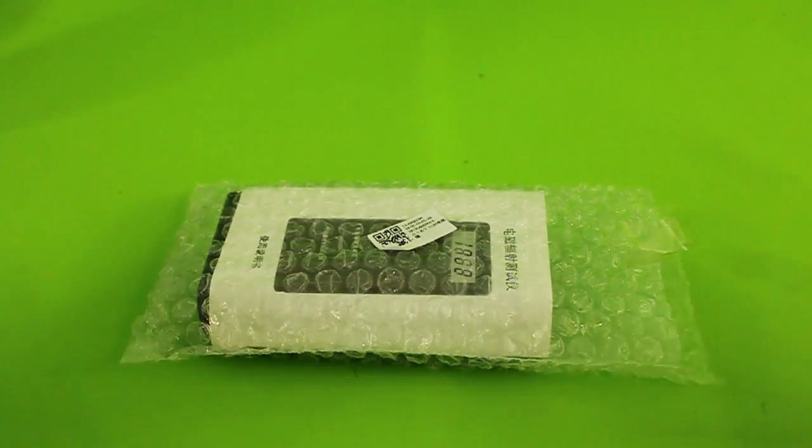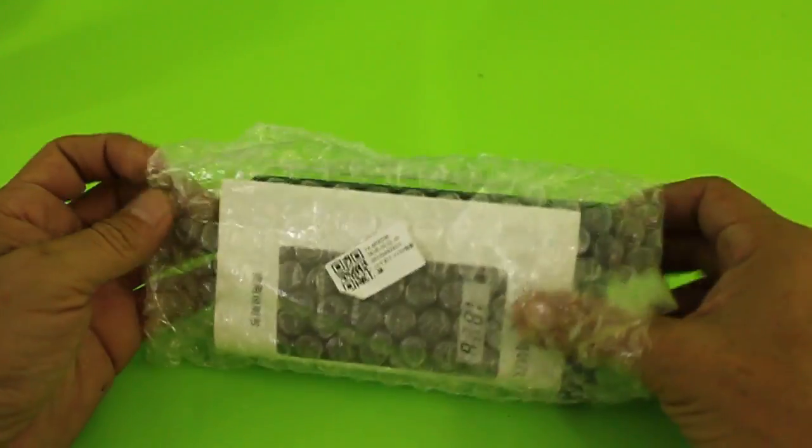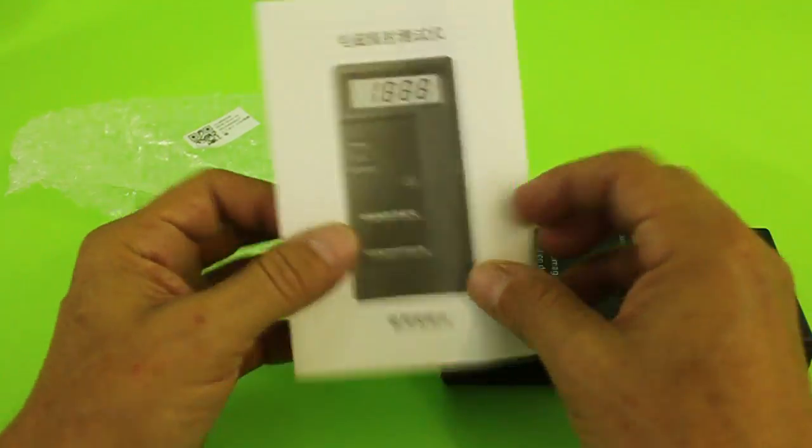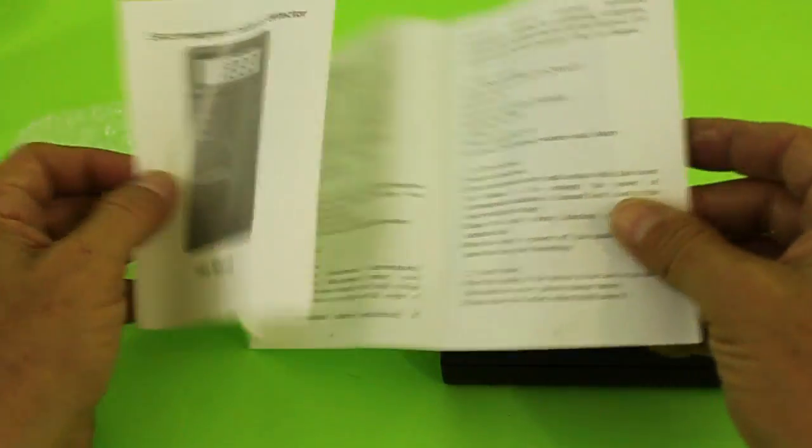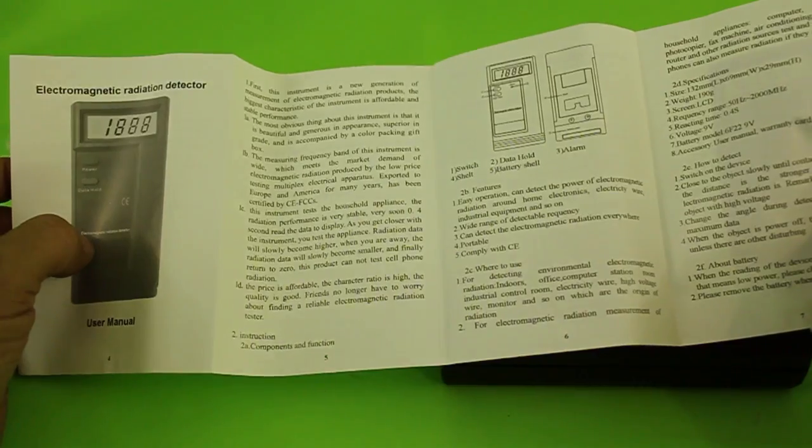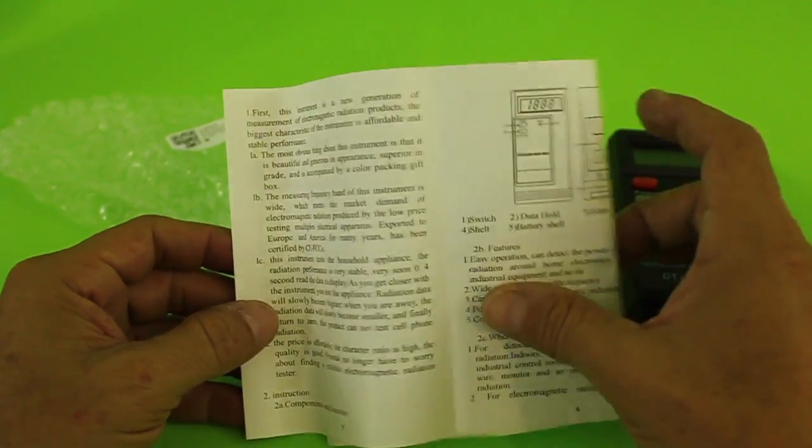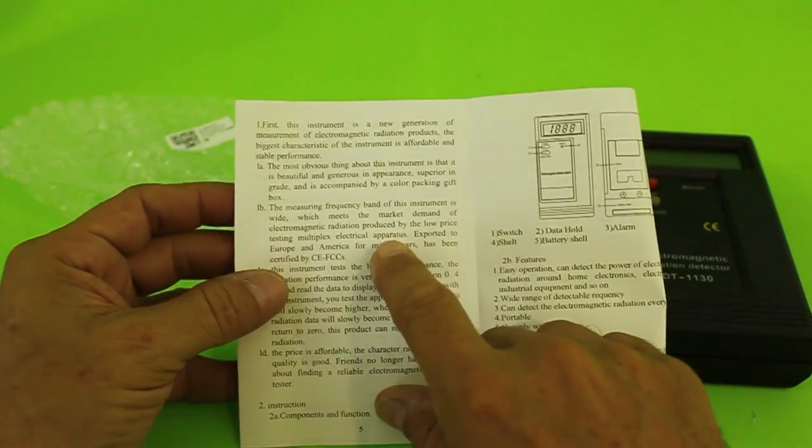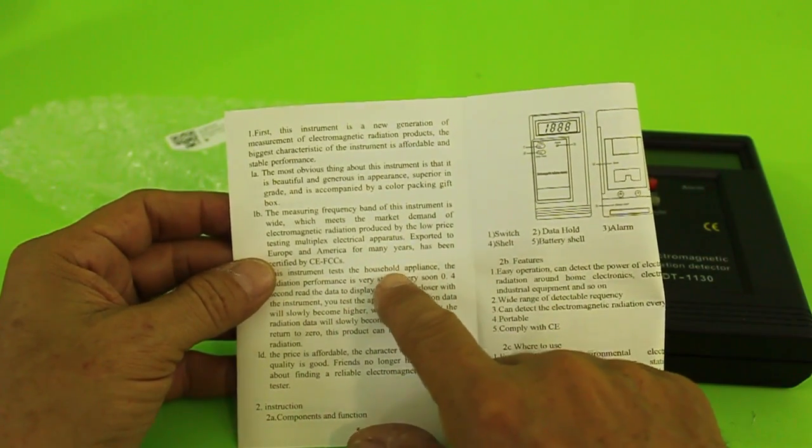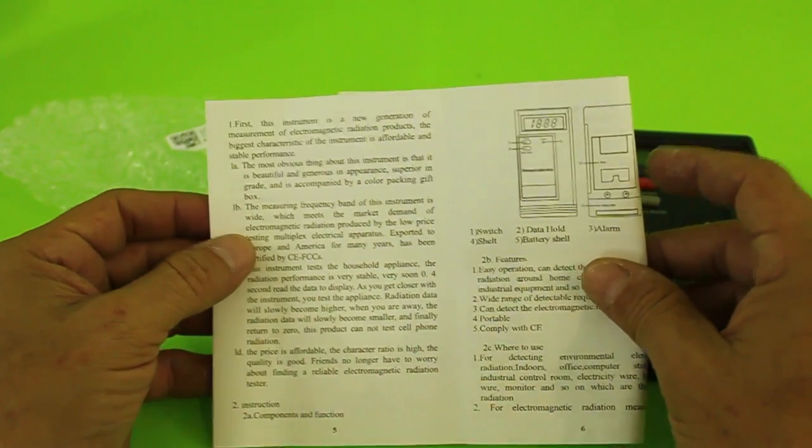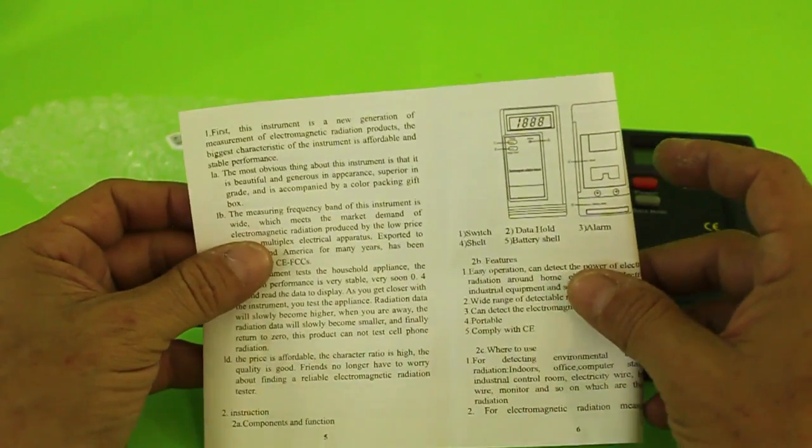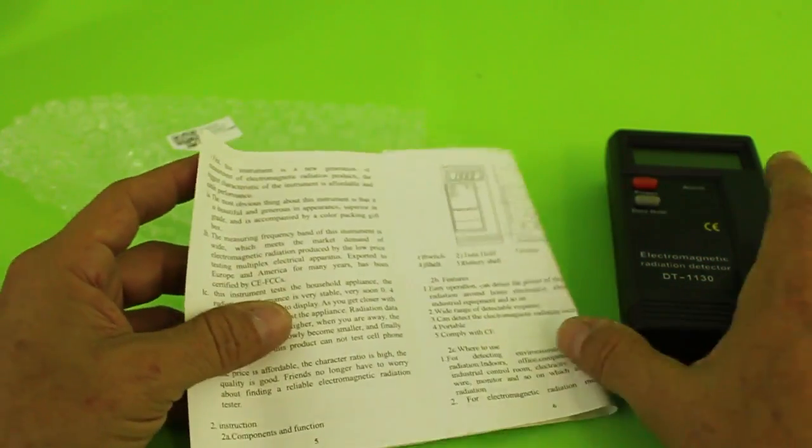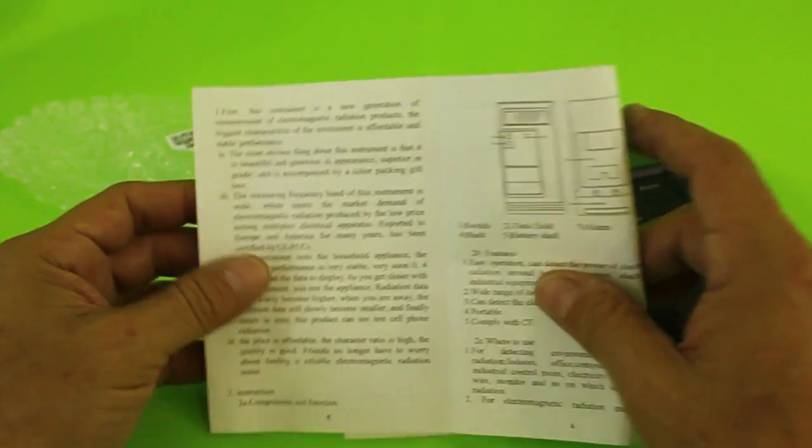Well, this is how I got it in the mail. It only comes with a little manual in Chinese and in English. The manual doesn't say much. The most obvious thing about this instrument is that it's beautiful and generous in appearance, superior in grade and is accompanied by a color packing gift box. Well, mine didn't come with a box. Too bad.